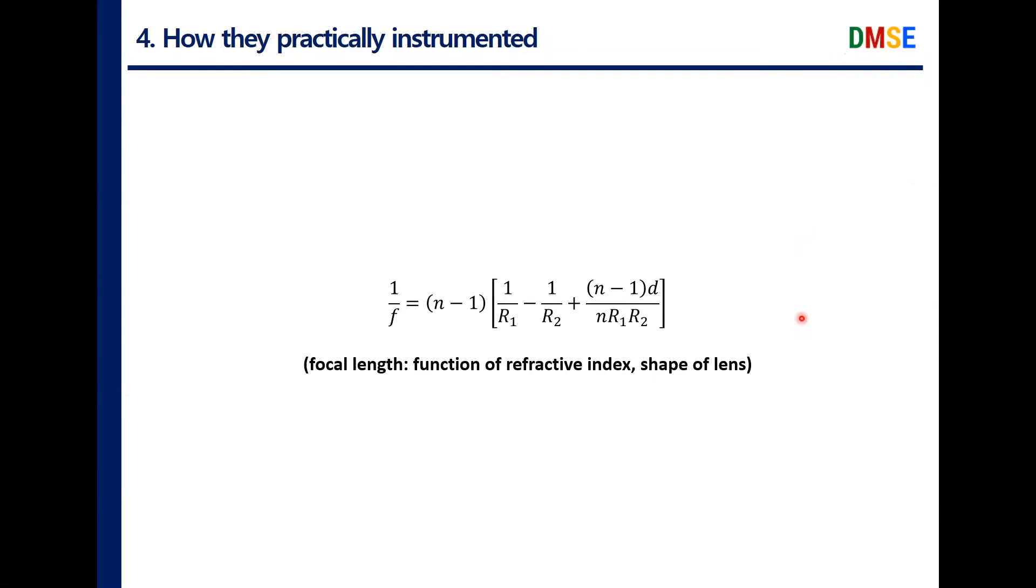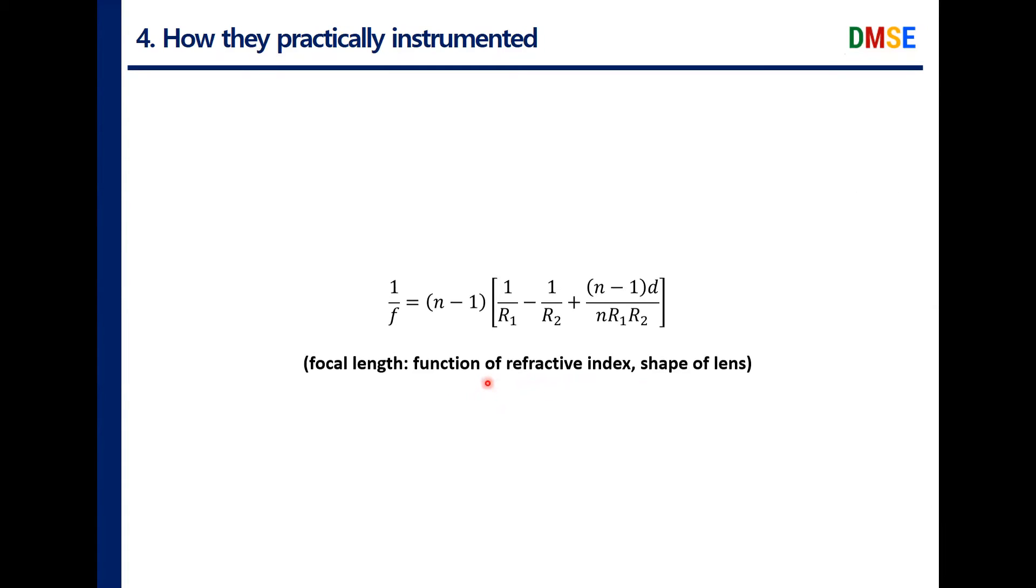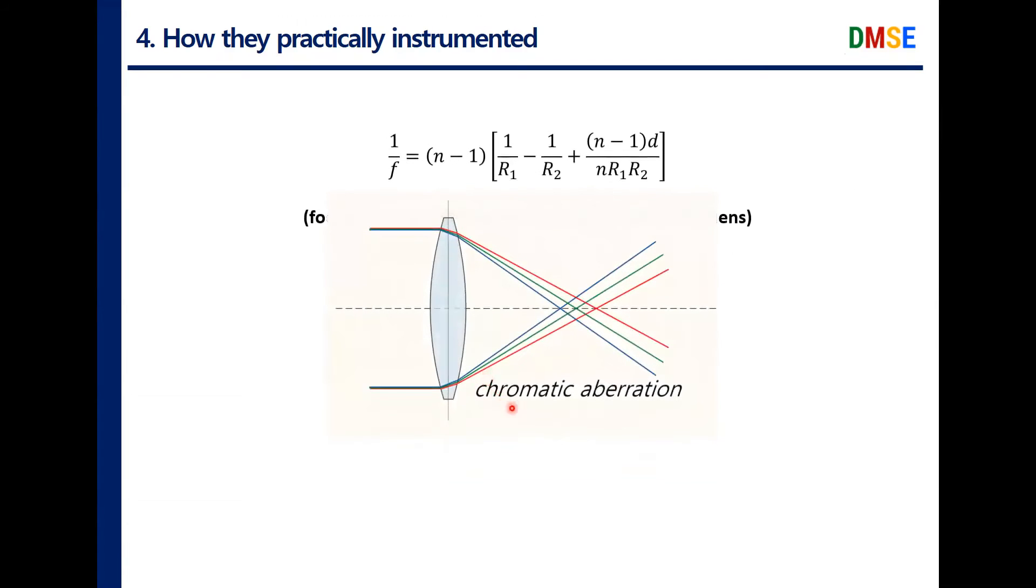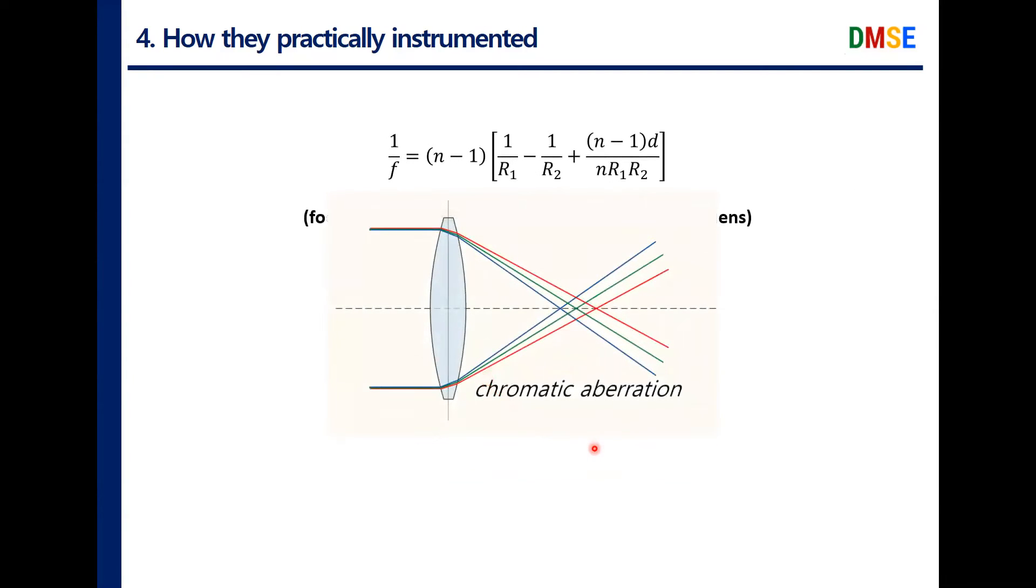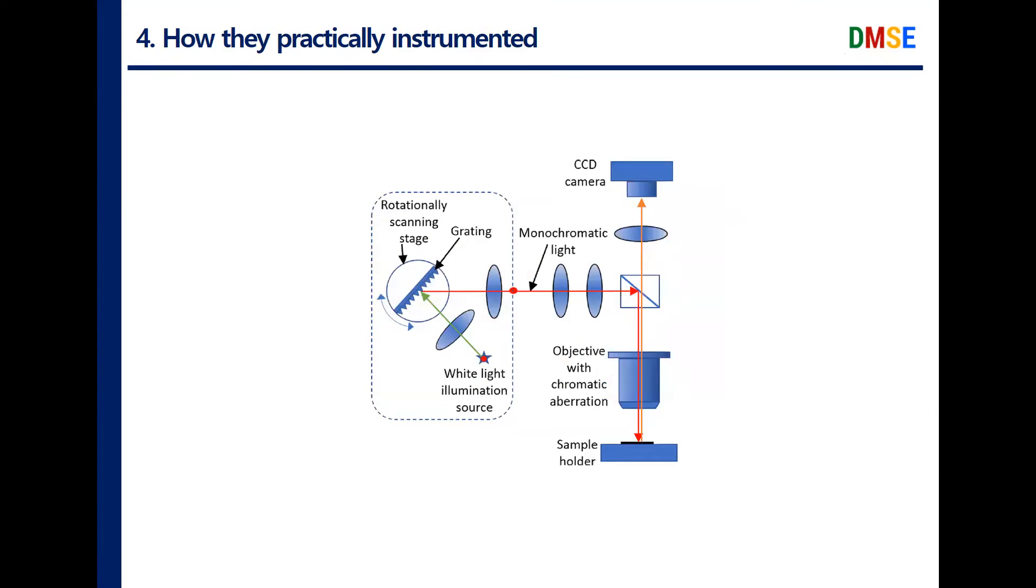Meanwhile, we can scan the sample by changing focal length. This is a well-known lens maker's formula. From this formula, we can know focal length is a function of refractive index and shape of lenses. At first, we can control the refractive index by utilizing chromatic aberration. Because the refractive index is related to wavelengths, wavelength scanning can obtain through focus images. We can obtain the monochromatic light using a grating like this.